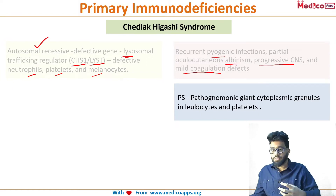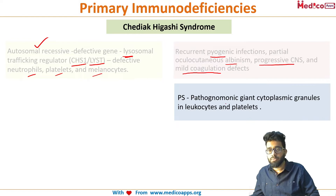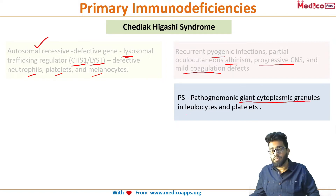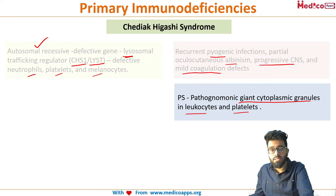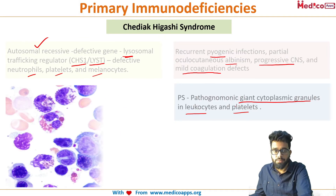The phagolysosome fusion does not occur due to the defective fusion mechanism. This results in large intracytoplasmic inclusion bodies, which are pathognomonic of Chediak-Higashi syndrome. These are giant cytoplasmic granules or intracytoplasmic inclusions seen in both WBCs and platelets. You need to get a CBC with peripheral smear to screen for this disorder whenever you suspect it. On the peripheral smear, the neutrophil shows a large intracytoplasmic inclusion body — this is the hallmark finding.